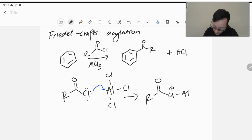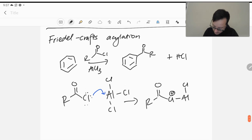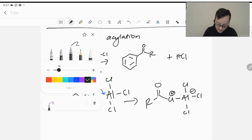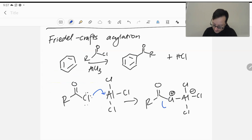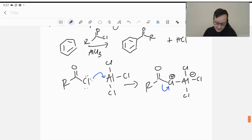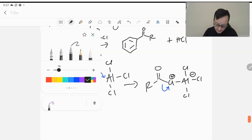So we have our positive chlorine, we've got our negative aluminum here. So interestingly enough, the exact same thing happens as before. Chloride leaves to stay on the aluminum instead, leaving us with an acylium ion.